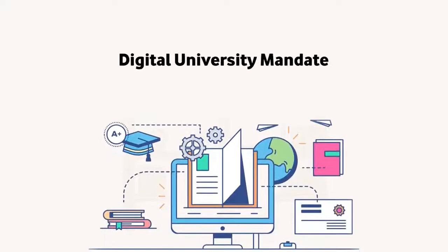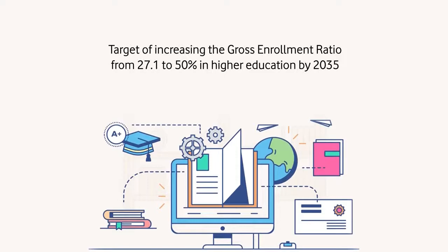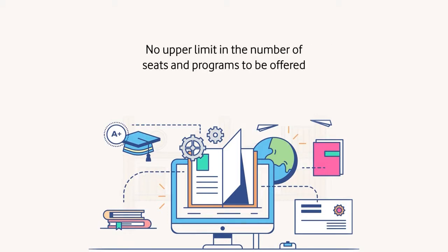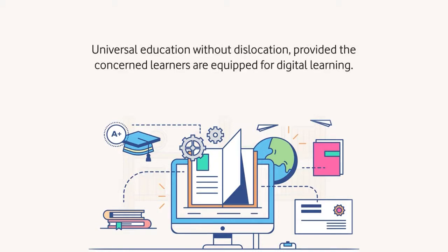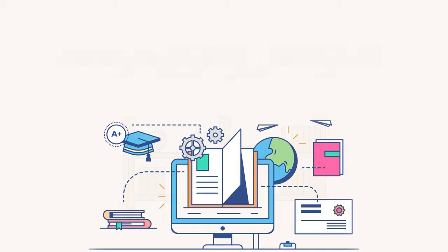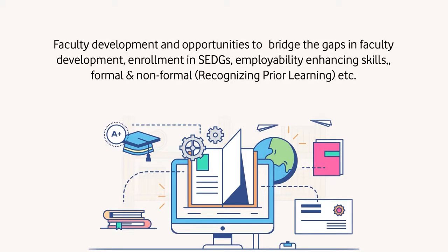The digital university mandate talks of raising the current Gross Enrollment Ratio of 27.1% to 50% in higher education by 2035, with no upper cap on the number of seats and online programs to be offered. Anyone who has passed Class 12 would be eligible for admission. It also covers universal education without dislocation, ensuring learners are equipped for digital learning, faculty development opportunities to bridge faculty gaps, and enrollment support for SEDGs, employability enhancement skills, and recognition of prior learning.